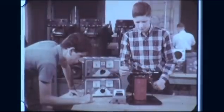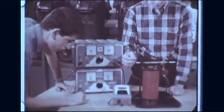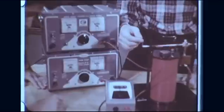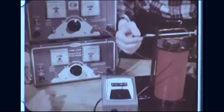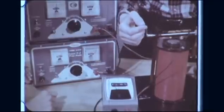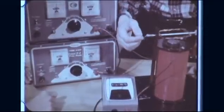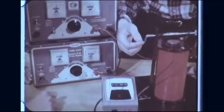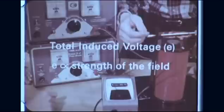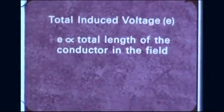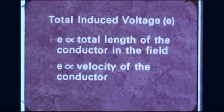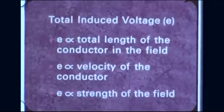The third factor determining the total induced voltage is the strength of the magnetic field. To demonstrate this, we will substitute an electromagnet for the permanent magnet, allowing us to control the strength of the field. If we increase the DC current that excites the magnet, the field becomes stronger, and we find the stronger the field, the greater the induced voltage. Induced voltage then depends on three factors: the total length of the conductor in the magnetic field, the velocity of the conductor, and the strength of the field.